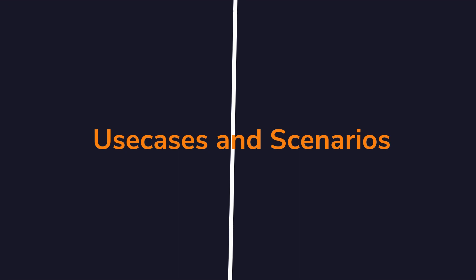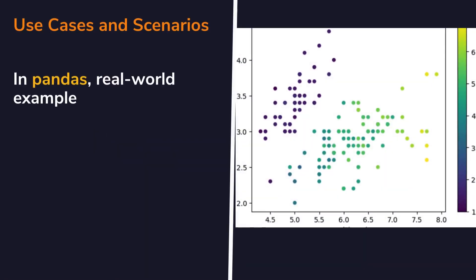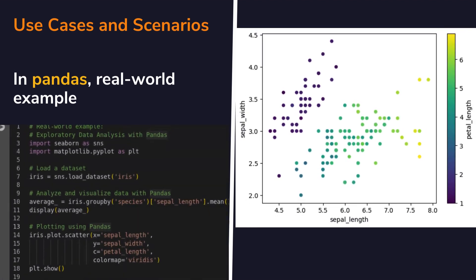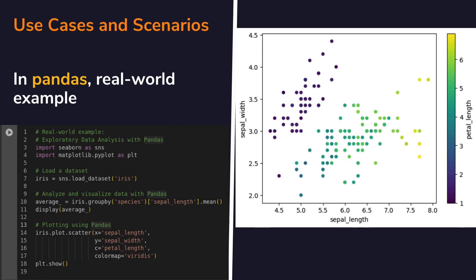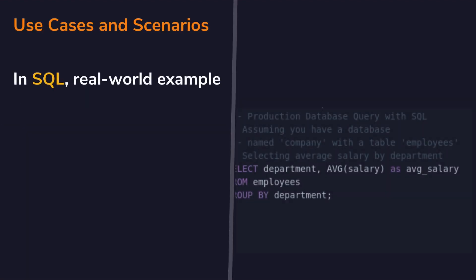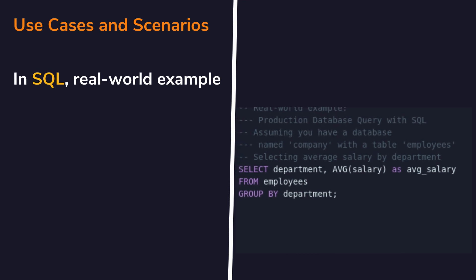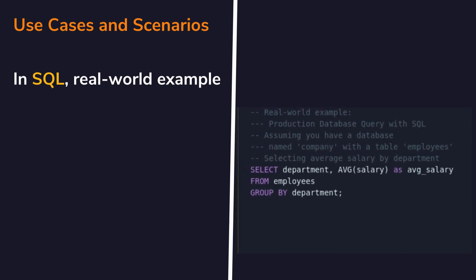Looking at use cases and real-world scenarios, both pandas and SQL are used effectively across a range of applications — from exploratory data analysis to production-level data management. Pandas excels in data wrangling and analysis, providing a flexible and intuitive framework for manipulating structured data. On the other hand, SQL empowers organizations to manage vast datasets with ease, facilitating robust data storage, retrieval, and manipulation in production environments.